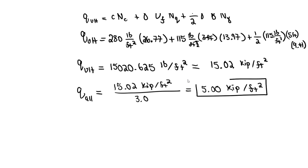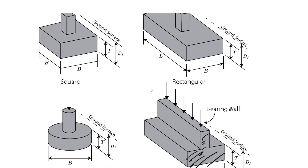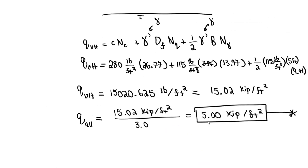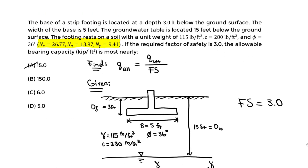We get Q_allowable equals 5.00 kip per foot squared. This is the allowable bearing capacity — force per foot squared of the footing cross-section. The correct answer is D. I hope this helps. Please subscribe and like, and let me know if you have questions. Thank you.